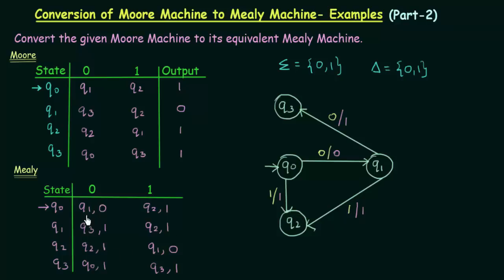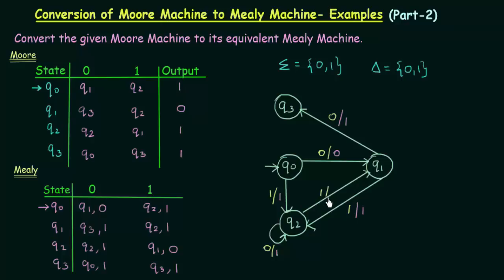Now let's come to Q2. Q2 on input 0 goes to Q2 itself, and what is the output that it gives? The output it gives is 1. And Q2 on input 1, where does it go? It goes to Q1. On input 1 it goes to Q1, and what is the output that it gives? The output that it gives is 0. Now we have completed Q2.